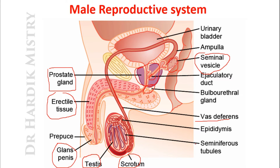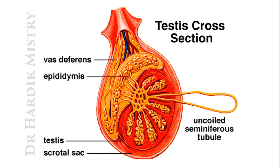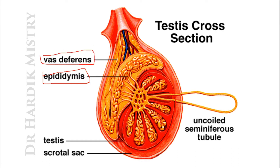Now we are seeing the structure of the testis in cross-section. The topmost and side portions of the testis are occupied by the epididymis. The structure that is continuous inside the abdominal or pelvic cavity is the vas deferens. The testis is present inside the scrotal sac. Do not confuse the coiled structure — that is known as the seminiferous tubules — with the epididymis.